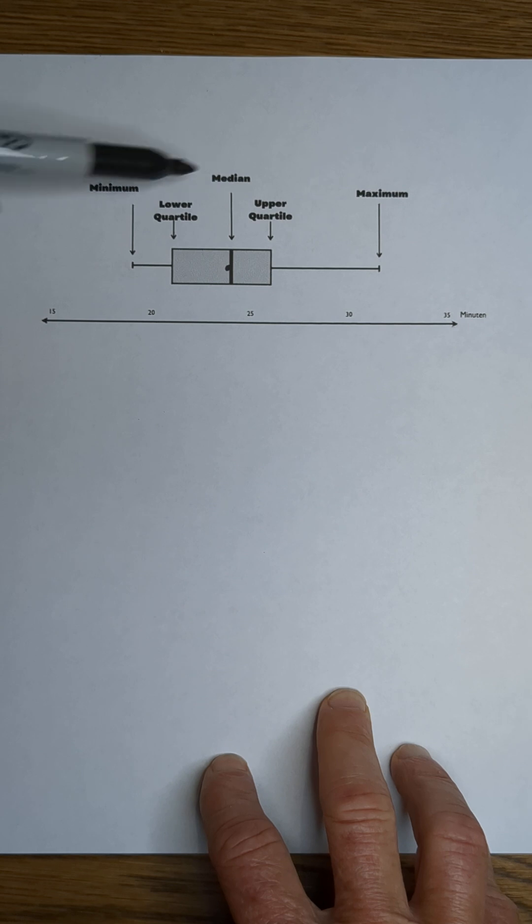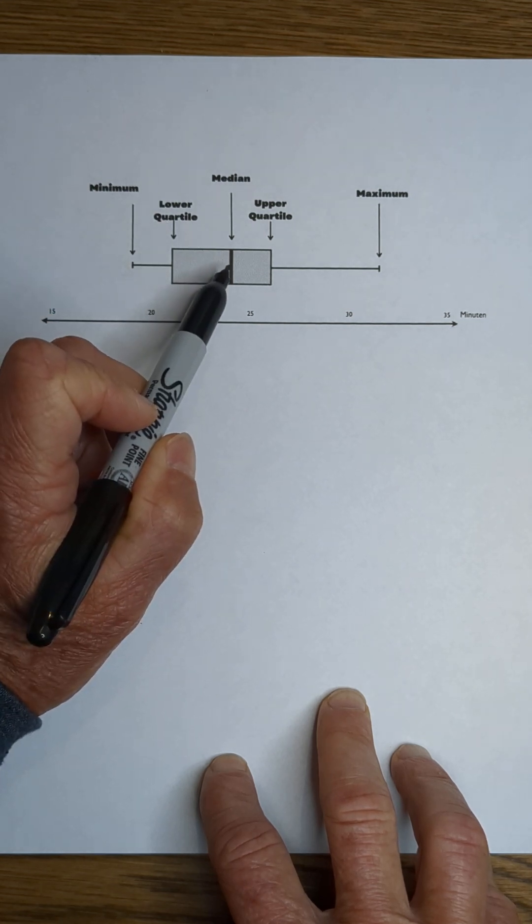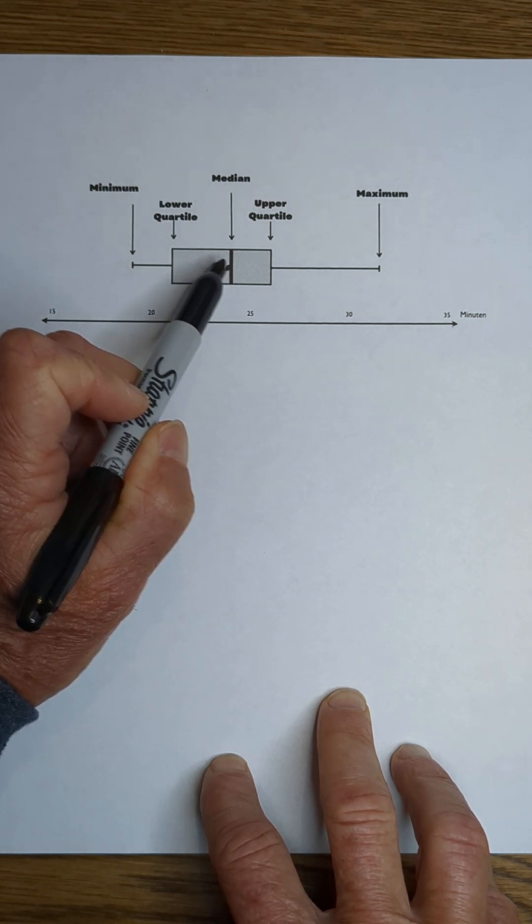This line right here is the median of all the data. This lower quartile, or Q1, is the median of the data from the median down.